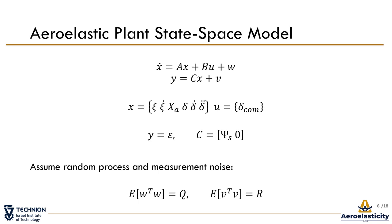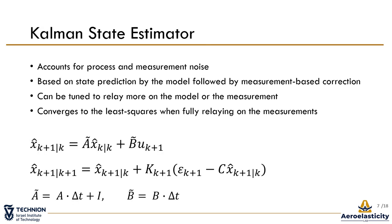This model assumes random process and measurement noises with given covariance. The Kalman state estimator uses the state space equation as a predictor based on previous data points, then corrects the prediction based on measurements by multiplying the innovation by the Kalman gain matrix K, which is based on the noise covariance matrices. The Kalman gain can be modified to rely more on measurements over the model, and vice versa, by changing the noise covariance values. In the extreme case of fully relying on measurements, the solution converges to least squares; when the Kalman gain goes to zero, the estimator relies fully on the model.